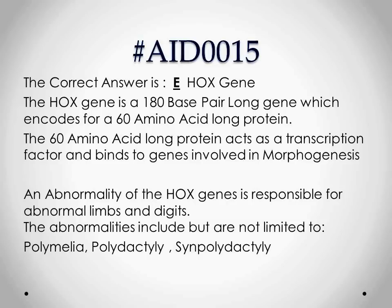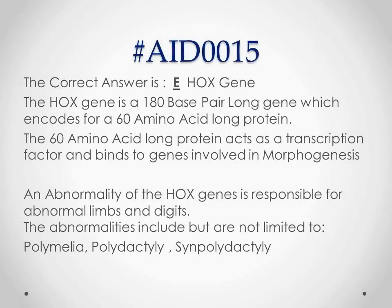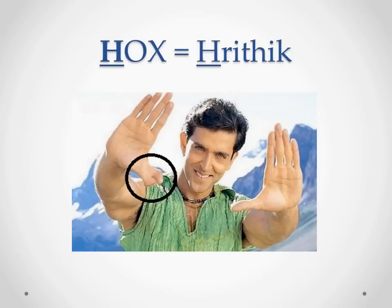This transcription factor is involved in modulating morphogenesis. Morphogenesis is the production of normal body parts in their normal location, which means that if a gene responsible for morphogenesis is abnormal, it will lead to formation of abnormal body parts at abnormal locations. That's exactly what happens with HOX genes. An abnormality of the HOX genes is responsible for abnormal limbs and digits — including polymelia, polydactyly, synpolydactyly, and many other digit or limb abnormalities.